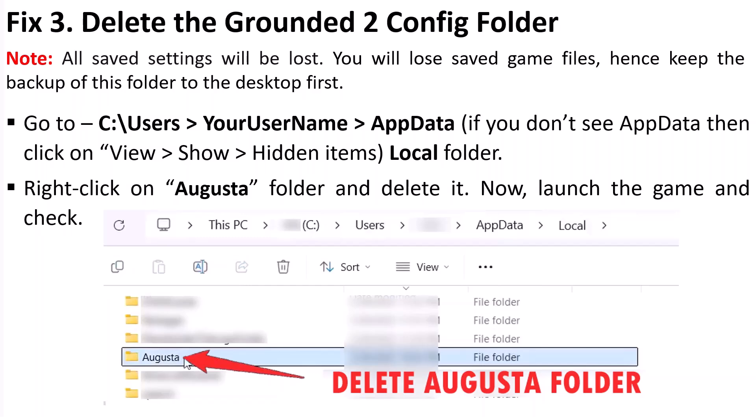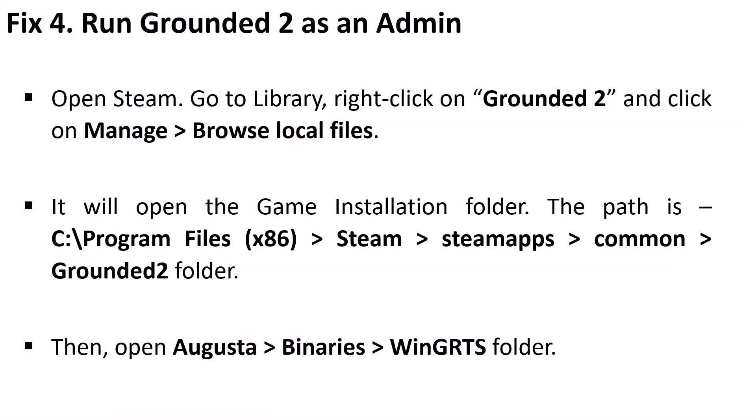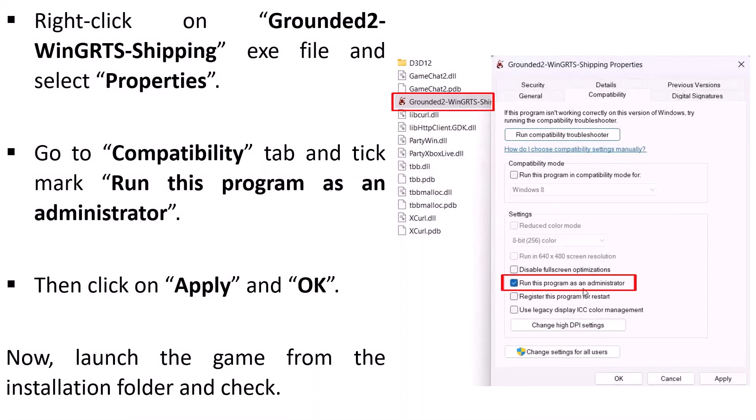The fourth solution is to run Grounded 2 as an administrator. Open Steam, go to Library, right-click on Grounded 2, click Manage, then Browse Local Files. This opens the game installation folder at: C drive → Program Files (x86) → Steam → steamapps → common → Grounded 2. Open the Augusta folder → Binaries → Win64 folder. Right-click on the Grounded2-Win64-Shipping.exe file and select Properties.